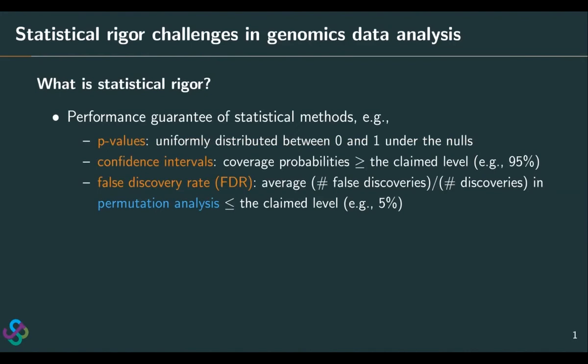Statistical rigor is frequently mentioned in the statistics field, but not so much in genomics. What is statistical rigor? It's actually about the performance guarantee of statistical methods. I'm going to use three examples to explain what I mean by performance guarantee. P-values are frequently used, and valid P-values need to be uniformly distributed between 0 and 1 under the null hypothesis. For confidence intervals, say a 95% confidence interval, we want its coverage probability for covering the true parameter to be greater than 95%. For the false discovery rate, short as FDR, we expect that the average proportion of false discoveries among our discoveries should be under the claimed level.